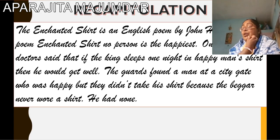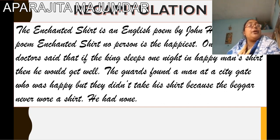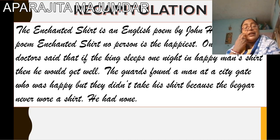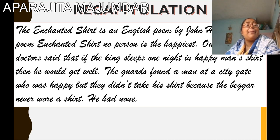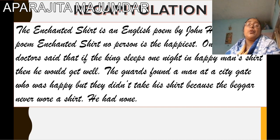For recapitulation, what did we read today? The Enchanted Shirt is an English poem by John Hay. In the poem, no person is the happiest. One of the two doctors said that if the king sleeps one night in a happy man's shirt, then he would get well. The guards found a man at the city gate who was happy — but they didn't take his shirt. Why? Because the beggar never wore a shirt. He had none. We will be seeing the rest next week.